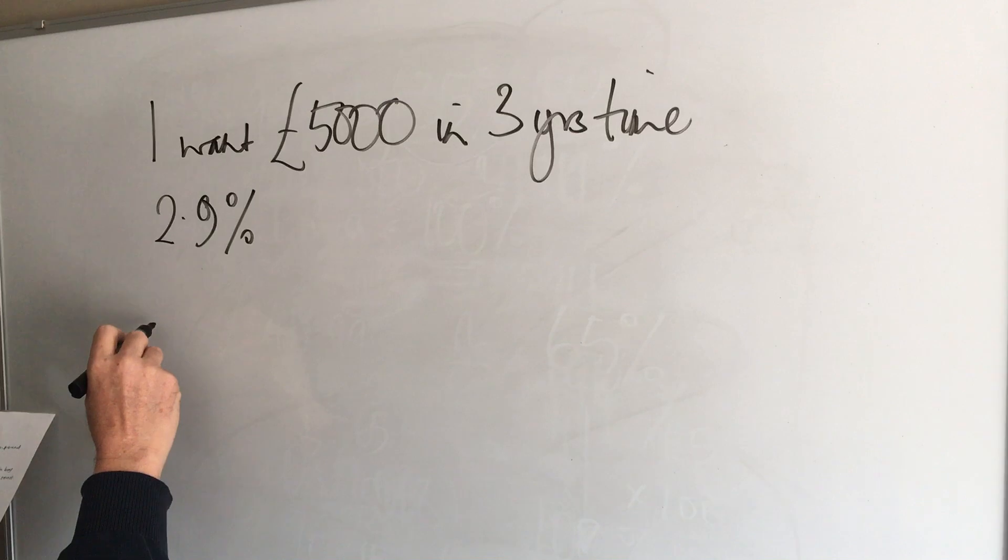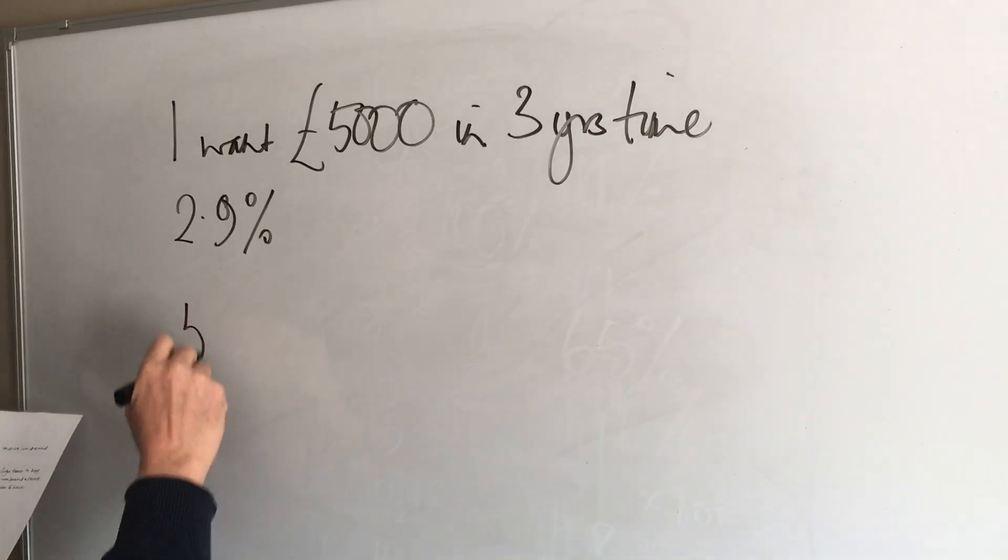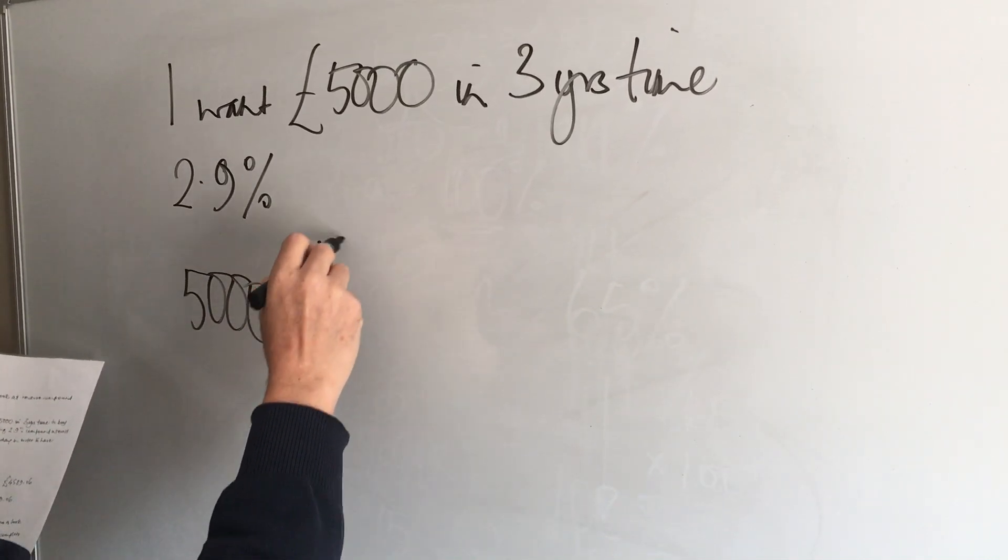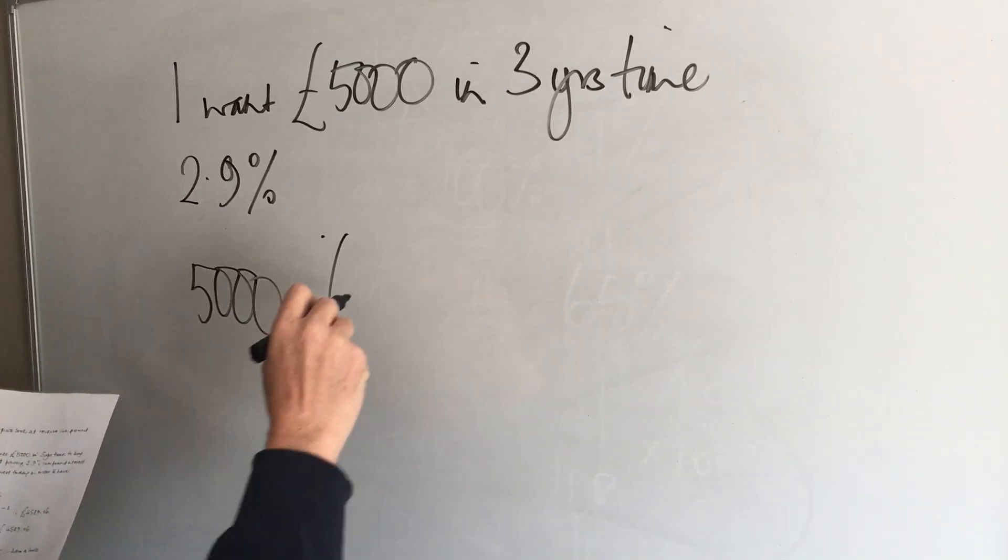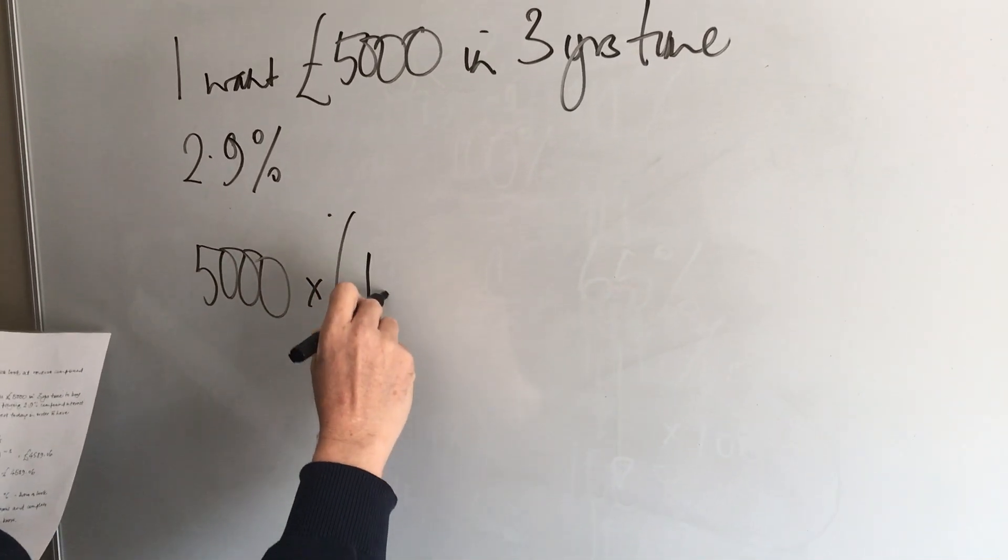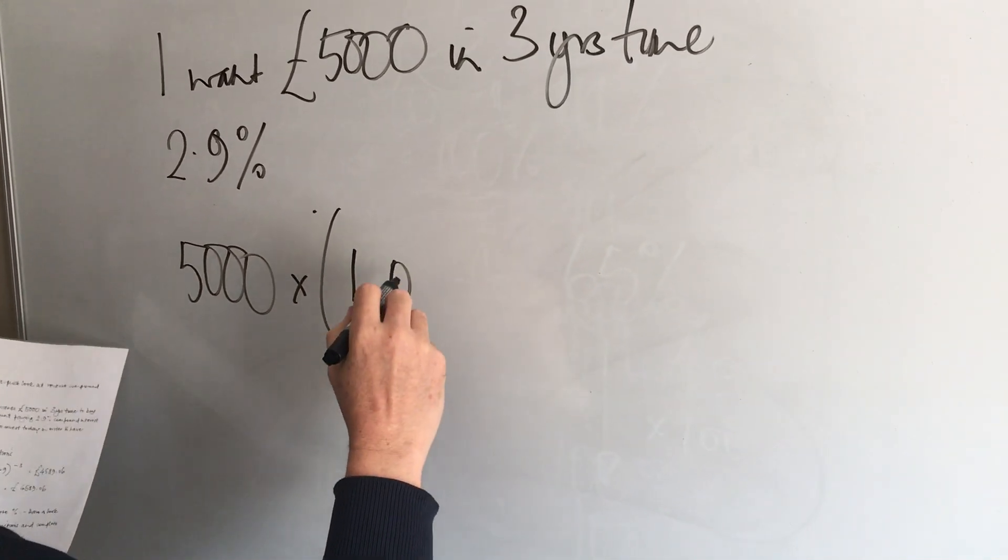So we start off this time with the original which is £5,000. We can multiply it by the multiplier. So we know it's 2.9 so our multiplier is going to be 1.029.